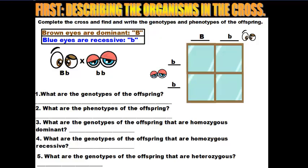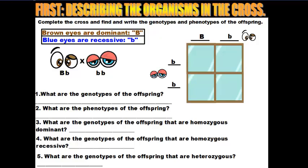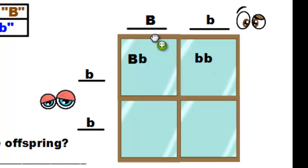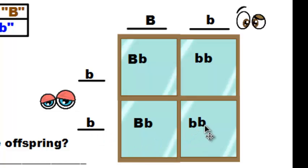Now let's look at how all this works in a Punnett square using eye color — brown and blue. We have two parents with different eye colors; the brown eye genotype is big B, little b, and the blue eye genotype is little b, little b. We've set up our Punnett square with the brown eye alleles on top and the blue eye alleles on the sides. We drop the letters down and bring them across, always writing the capital dominant letter first, to fill out the square.